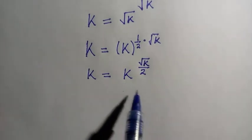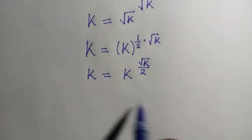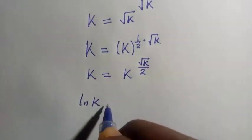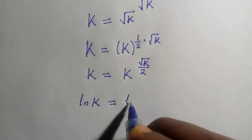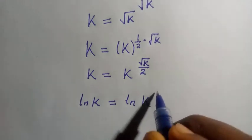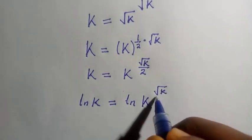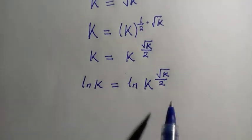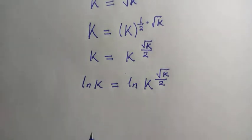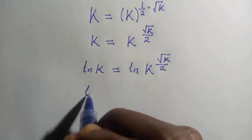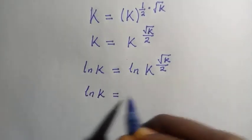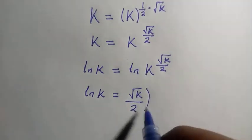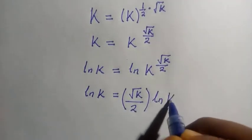And again, when we have something like this, the next thing we are going to do is we try to introduce natural logarithm to both sides. By doing that, we have ln of k equals ln of k to the power of square root of k divided by 2. And by the rule of logarithm, the power comes down, so that we have ln k equals the square root of k divided by 2, in brackets, times ln k.